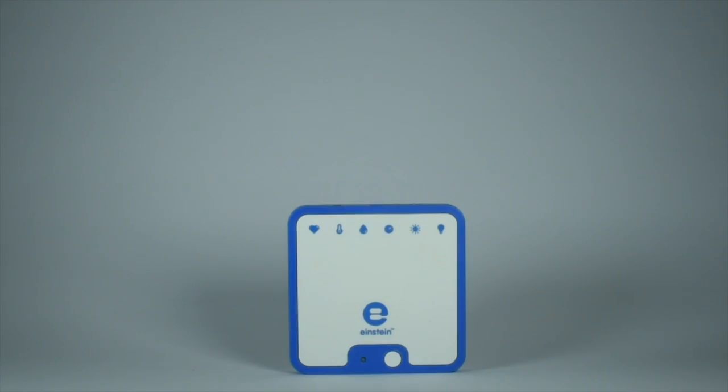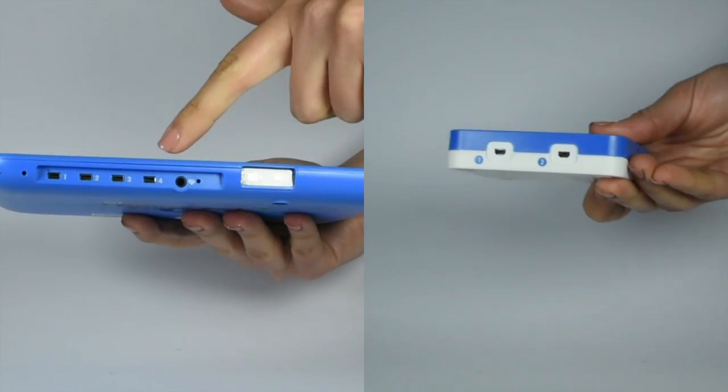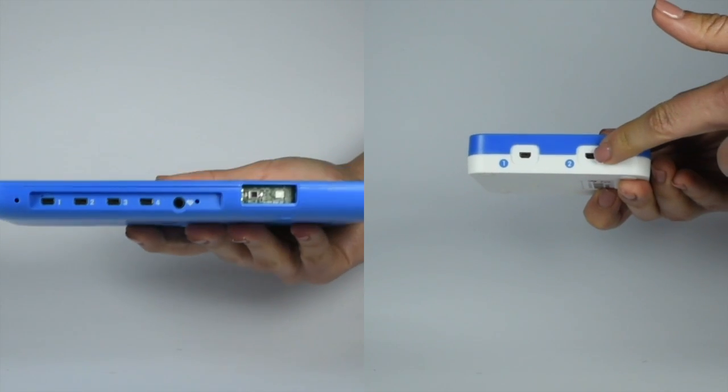Now let's connect and use the temperature sensor. First, insert the sensor cable into one of the ports on your Einstein device.